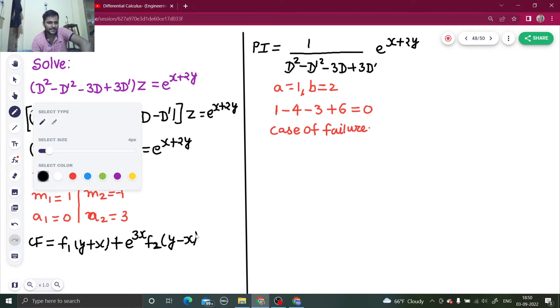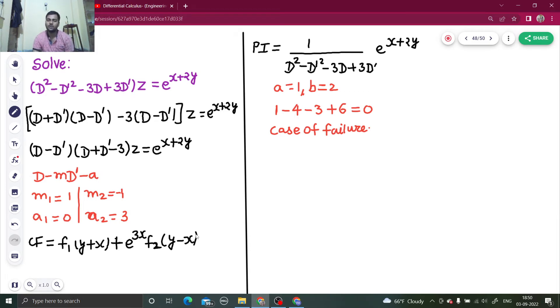What we do in case of failure? We differentiate the denominator partially with respect to d and multiply 1x in the same step. Multiply it by 1x. Differentiate the denominator. So 2d, second term derivative is 0, and minus 3.